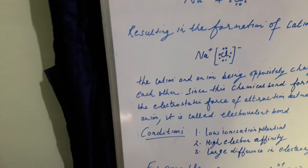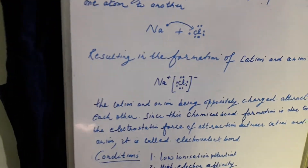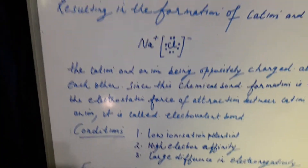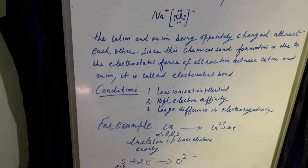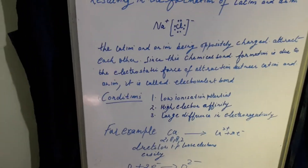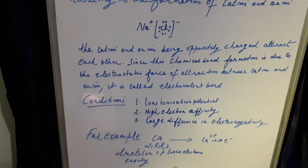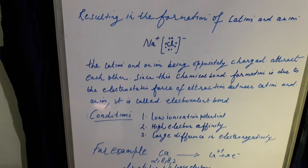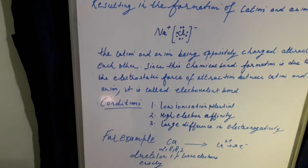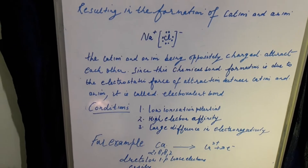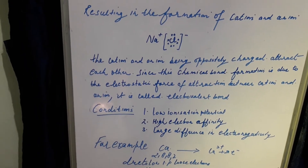Now we will discuss the conditions which are needed for the formation of an electrovalent bond. The first condition: atoms should have low ionization potential. Metals have low ionization potential, hence they can easily lose an electron to form a cation.